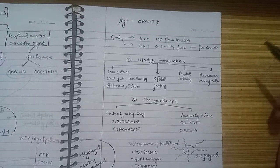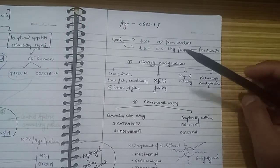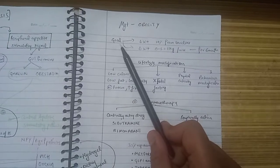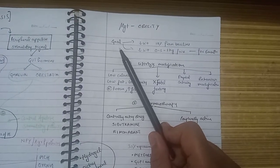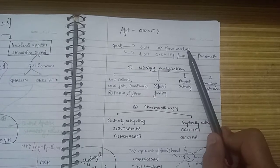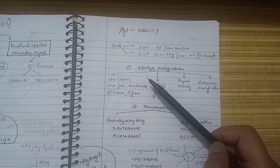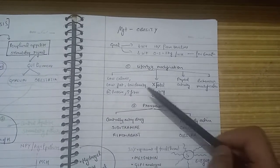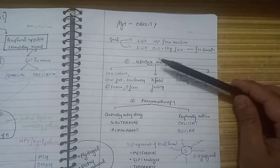Hello everyone, in this video we are going to understand the management of obesity. First, we need to know the goal of our management: to reduce the weight by 10 percent from the baseline weight or 0.5 to 1 kg every week for six months.